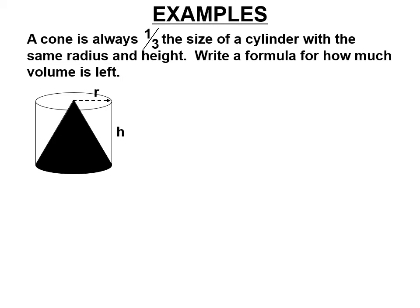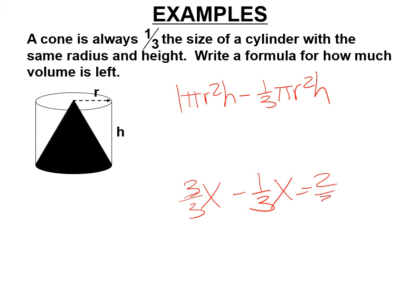A cone is always one-third the size of a cylinder with the same radius and height. Write a formula for how much volume is left. So if you have a whole cylinder, pi r squared h, and you take away one-third pi r squared h, what do you get? Think about it. If you have one whole, or if you have one x, and you take away one-third x, what's left? Well think about it. This is three-thirds x. What's left is two-thirds. If you take away a third, two-thirds is left. So the formula, you don't have to memorize this or anything, but I'm just trying to show you the relationship. If the cone is one-third the volume, the formula to find the rest is two-thirds pi r squared h.